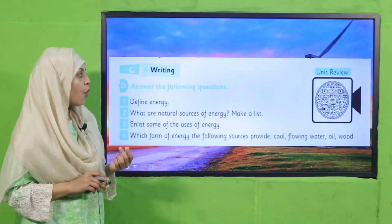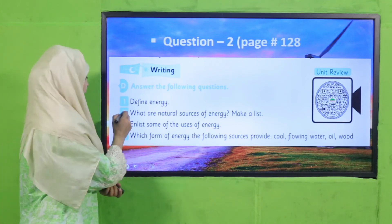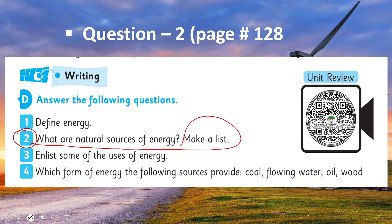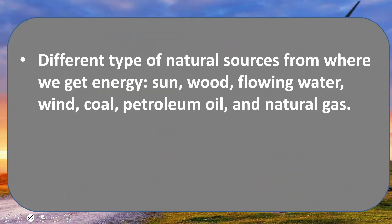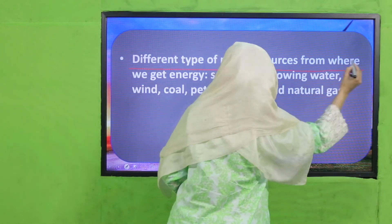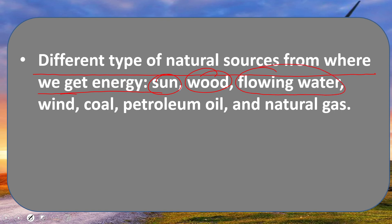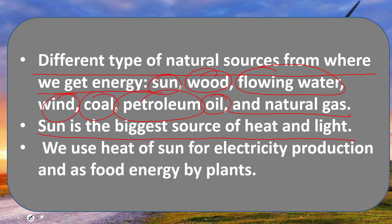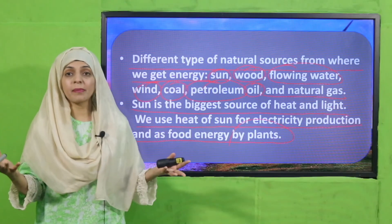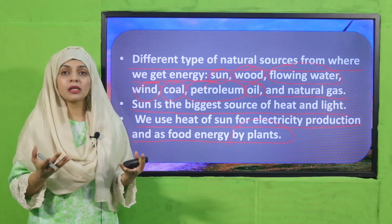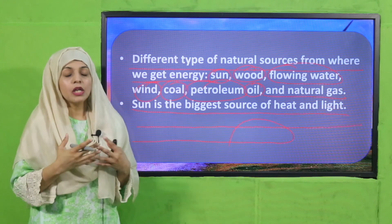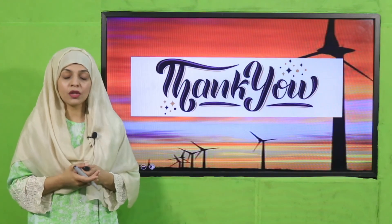For homework, you will do question number two on page number 128: 'What are the natural sources of energy? Make a list.' Prepare a list of natural sources of energy and finish it in your notebooks. In today's lecture we have learned about different natural sources from where we get energy — the sun, wood, flowing water, wind, coal, petroleum oil, and natural gas. The sun is the biggest source of heat and light, used for electricity production and as food energy by plants. I hope you enjoyed today's lecture. Keep everybody around you safe, have a good day. Thank you so much.